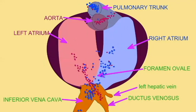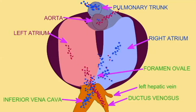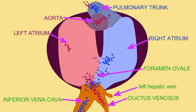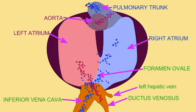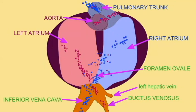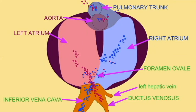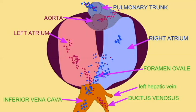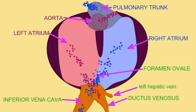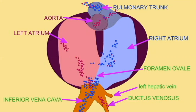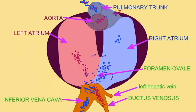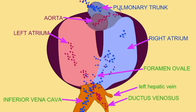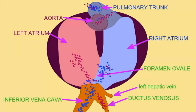The atrial septum does not completely divide the right and left atria during development, and instead an opening known as the foramen ovale allows blood to pass into either of the two atria from the inferior vena cava. The angle at which the superior and inferior vena cava enter the right atrium ensures that the majority of their blood, which is largely deoxygenated, will be shunted towards the right atrium and right ventricle.